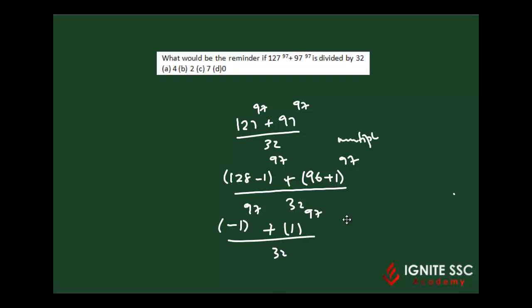And (1)^97 is plus 1, so we have minus 1 plus 1 equals 0. The remainder is 0, that is your answer.